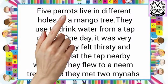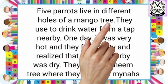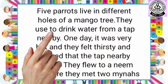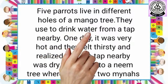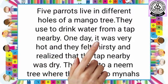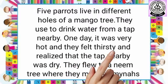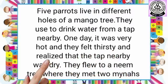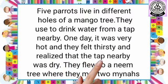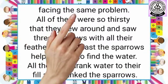Five parrots live in different holes of a mango tree. They used to drink water from a tap nearby. One day it was very hot and they felt thirsty and realized that the tap nearby was dry. They flew to a neem tree where they met two manas facing the same problem.